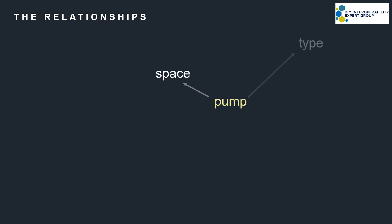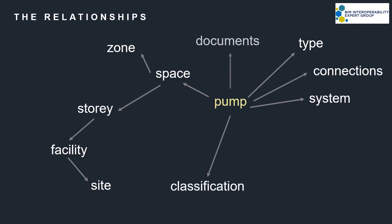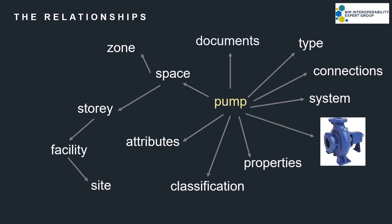It's the relationships which make IFC so powerful. An instance of a pump is associated with a space and a pump type. The space is located on a building storey and may be part of a zone. The storey is part of a facility, which sits on a site. The pump will also be part of a system, connected to pipe fittings, have detailed classification assigned to it, be referenced in documents, and have basic information like a name, description, ID, and properties like pressure. It might also have risk associated with it. And that's just one pump.